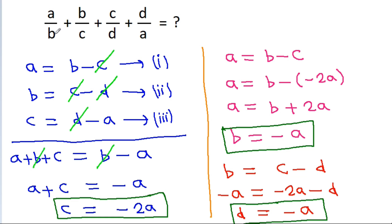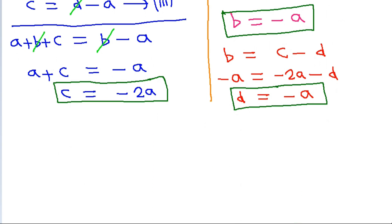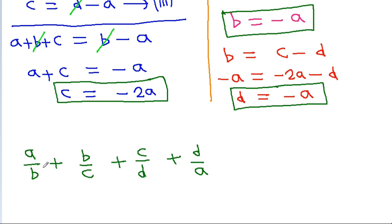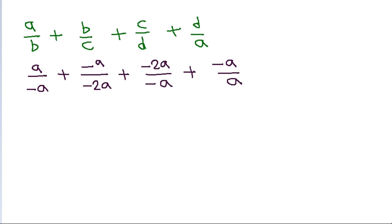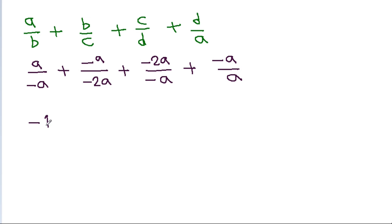We have to find the value of a by b plus b by c plus c by d plus d by a. Substituting, a by b is a by minus a; b by c is minus a by minus 2a; c by d is minus 2a by minus a; and d by a is minus a by a. So a by minus a will be minus 1, minus a by minus 2a will be 1 by 2, minus 2a by minus a will be 2, and minus a by a will be minus 1.